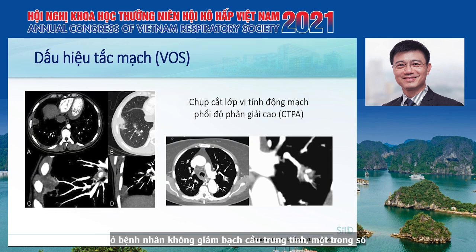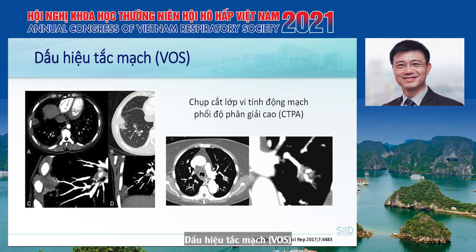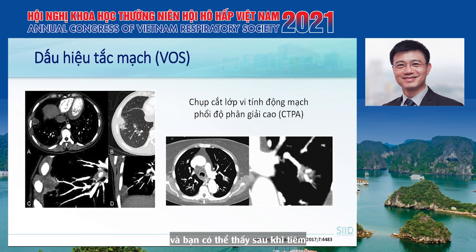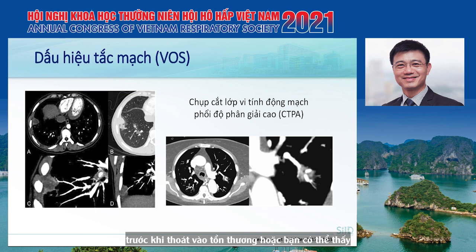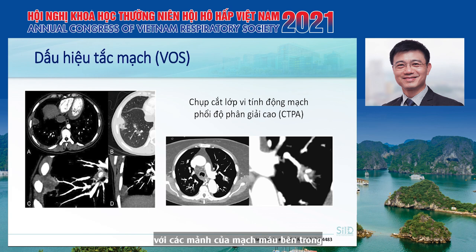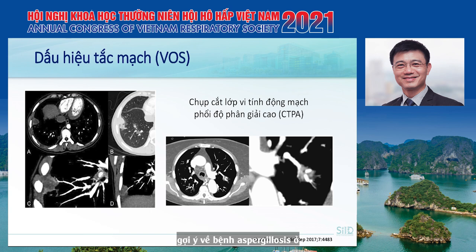In non-neutropenic patients, one useful sign is the vessel occlusion sign, or VOS, using high-resolution CT with pulmonary angiography. After injection of contrast media, you can see the blood vessel stop before reaching the lesion, or fragmentation of the blood vessel inside the lesion. This is suggestive of aspergillosis in non-neutropenic patients.